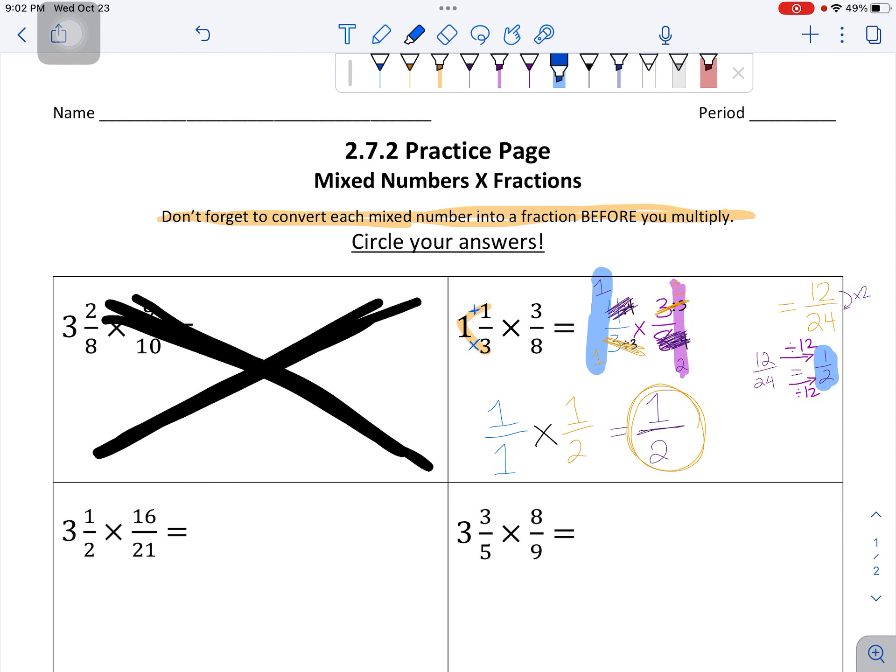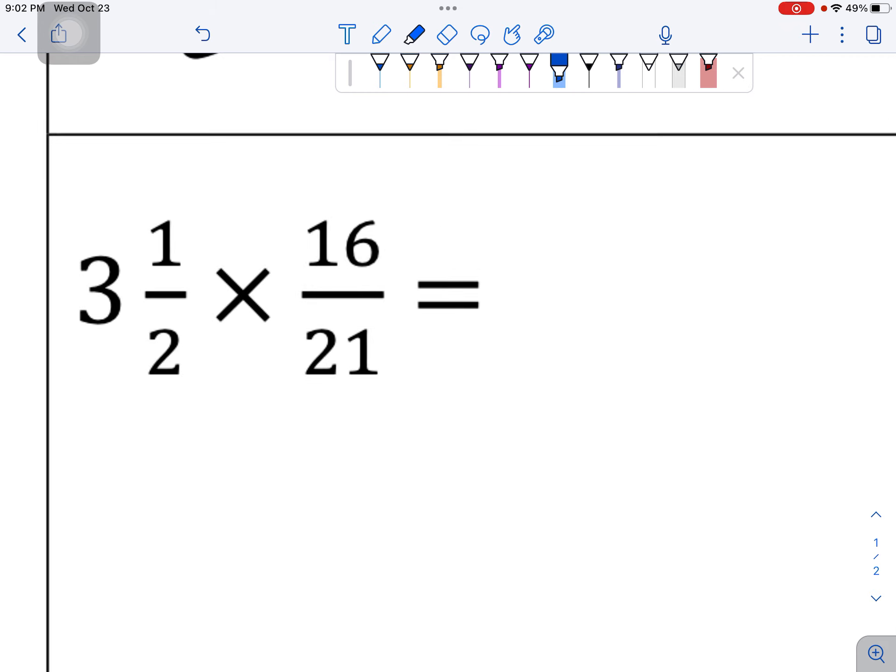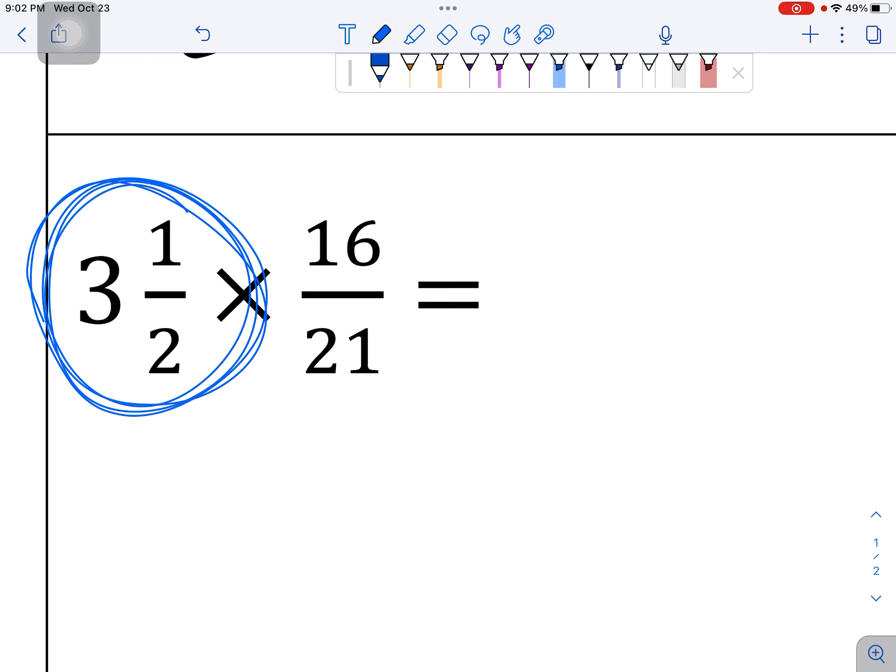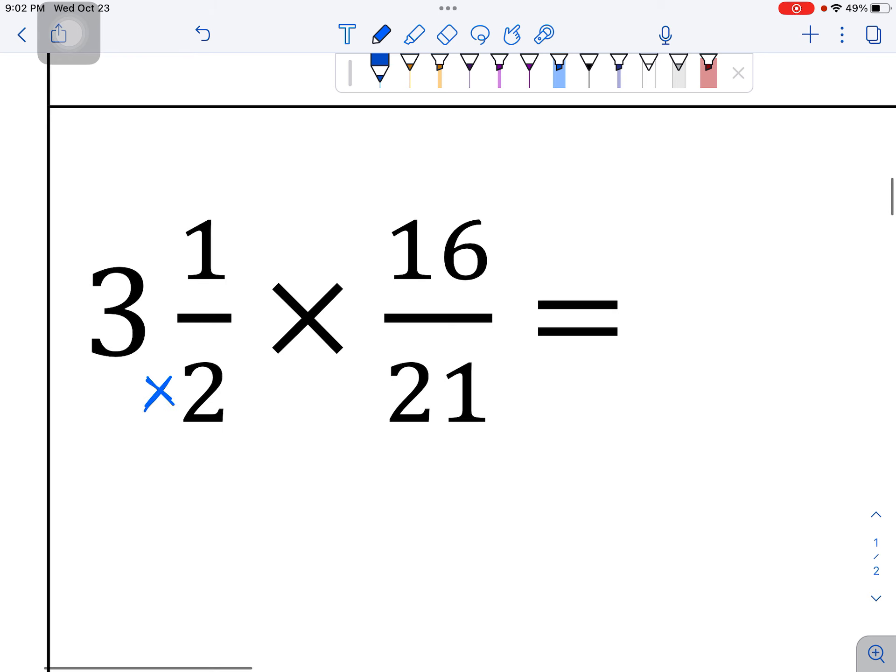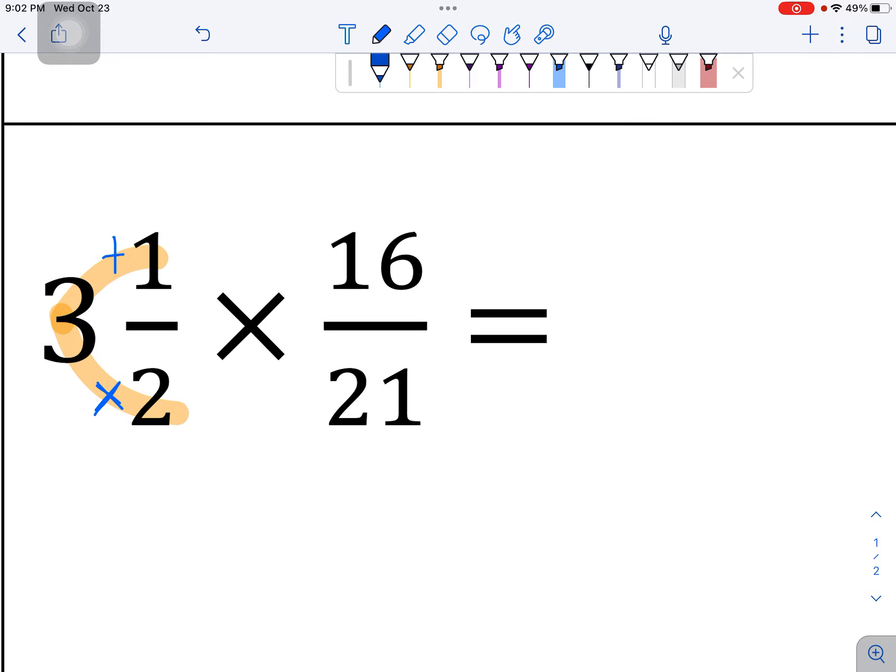All right. If you want to see one more example, keep watching. If you think you're ready to try on your own, I'm going to do 3 and a half times 16 21sts. First, I notice that this number out in front is not a fraction. It's a mixed number. That means I'm going to put in the times and the plus. And I'm going to work my way around. 2 times 3 is 6. And then I add 1. So again, 2 times 3 is 6. And then plus 1. That's 7. Which means the first mixed number is really the fraction, 7 halves.